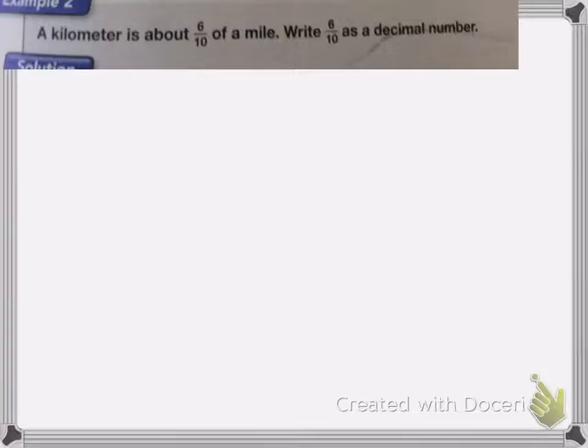In this next one, a kilometer is about 6 tenths of a mile. Write 6 tenths as a decimal number. So we have 6 tenths, and if we're going to write it as a decimal number, we have our decimal place.